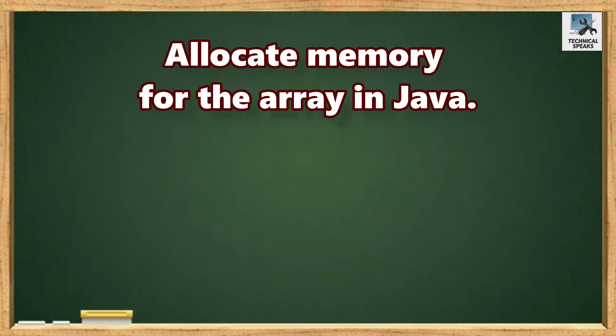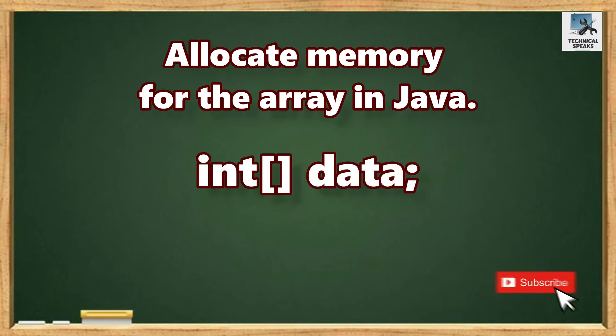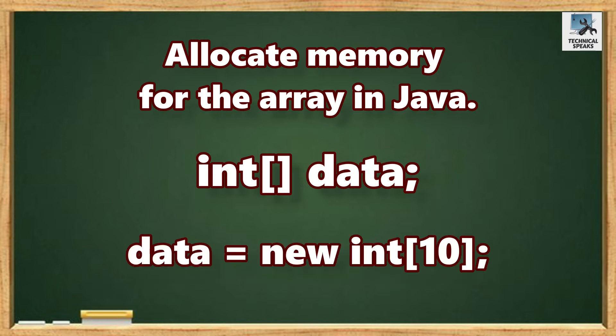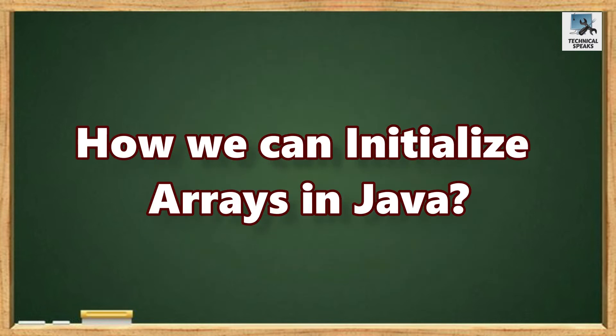we first need to allocate memory for the array in Java. For example, let's declare an array data of int data type like int data. Now to allocate memory, we simply add data equals new int and the size, 10. Here the array data can store 10 elements, so the size or length of the array data is 10.